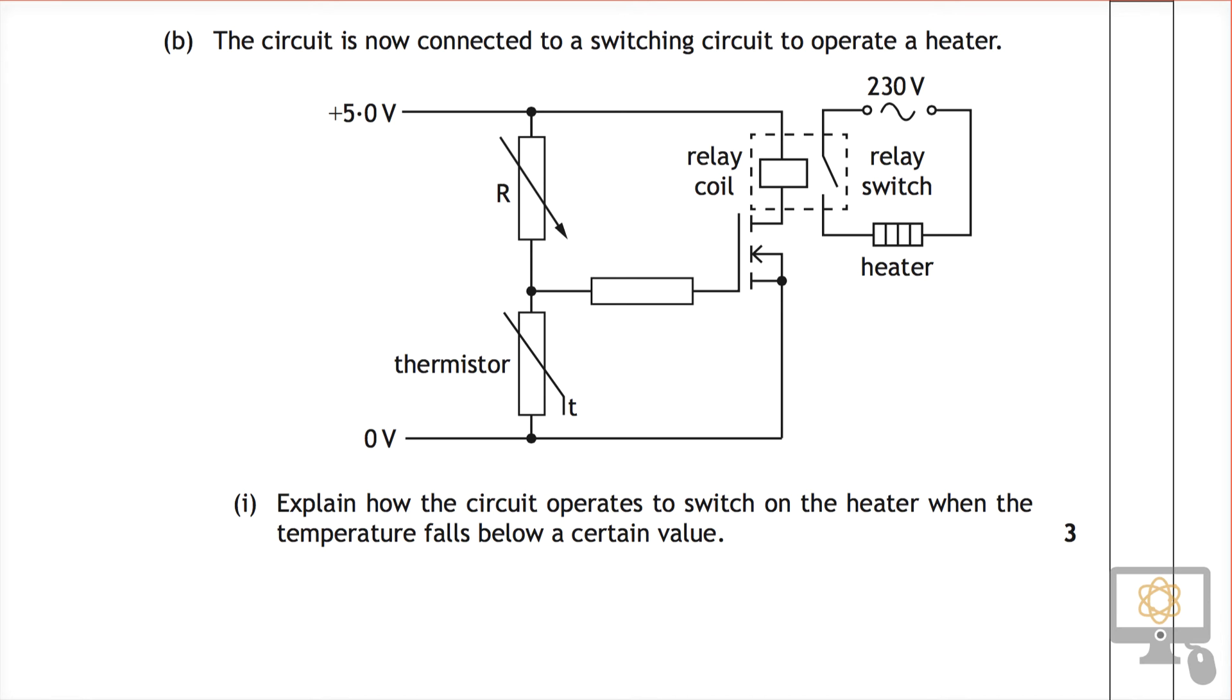Okay, so now let's look at 2B part 1 from the 2014 National 5 physics paper. It says the circuit is now connected to a switching circuit to operate a heater. Now the circuit in question is this part of the circuit here, the original circuit that was in the first part of the question, the potential divider.